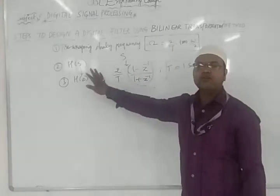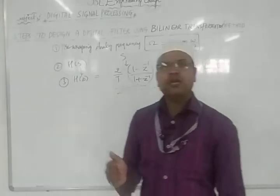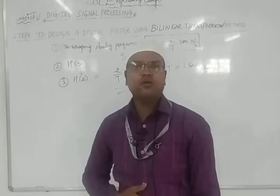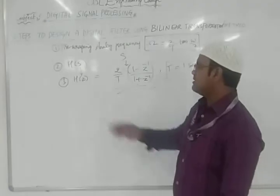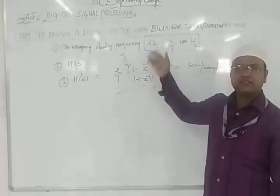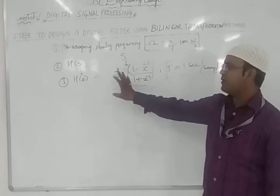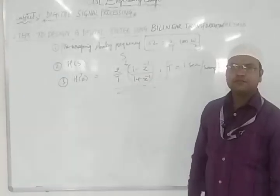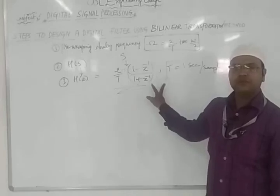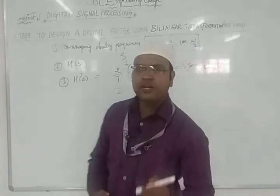The next step is to obtain H(s) — the s-domain transfer function given in the question — and convert it into the z-domain. To do this, we use the bilinear transform substitution: s = (2/T) × (1 − z⁻¹)/(1 + z⁻¹). This factor converts the s-plane into the z-plane for the bilinear transformation method.